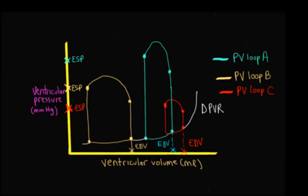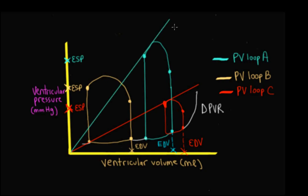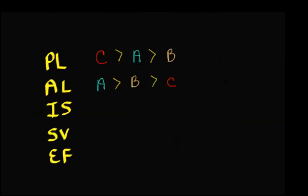Now let's look at the inotropic state. We need the end systolic pressure-volume relationship, which isn't drawn in, so we need to draw it in by taking a line from about the origin through each end systolic pressure-volume point. Drawing those lines for C, A, and B, you can see that the inotropic state for B is greater than A is greater than C.